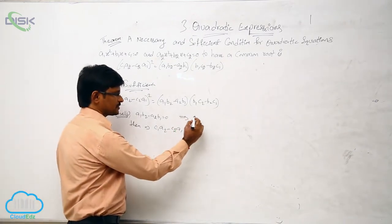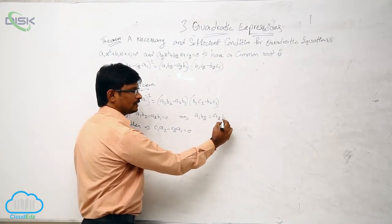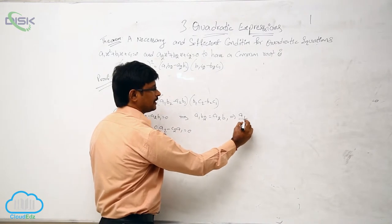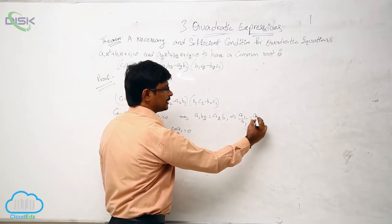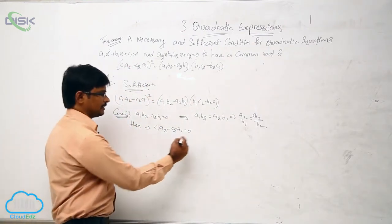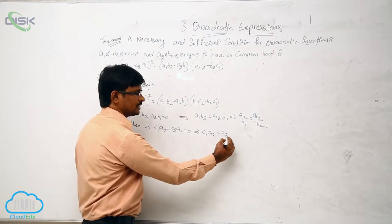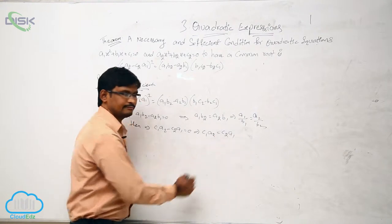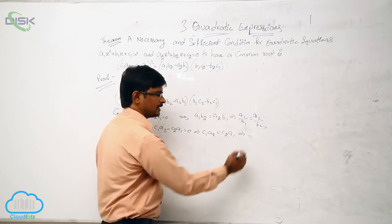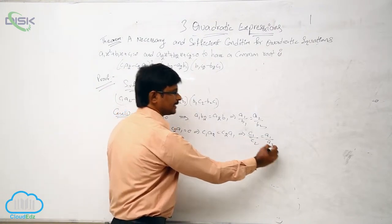See the simplification: a1·b2 = a2·b1, which implies a1/b1 = a2/b2. Similarly, from c1·a2 = c2·a1, we get c1/c2 = a1/a2.